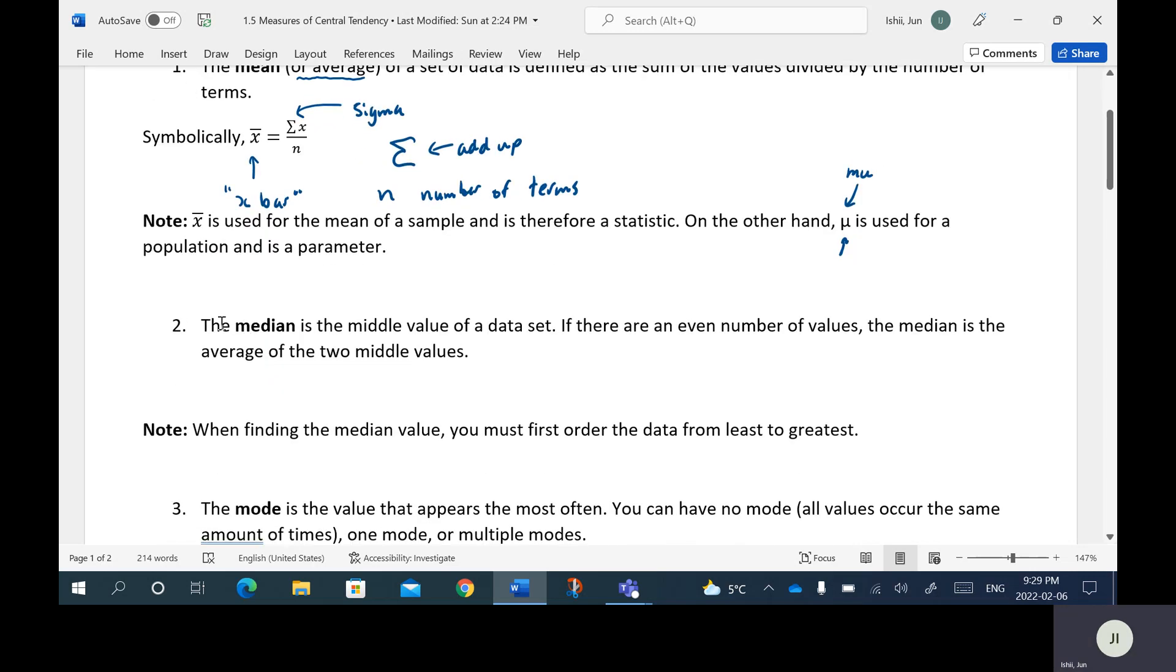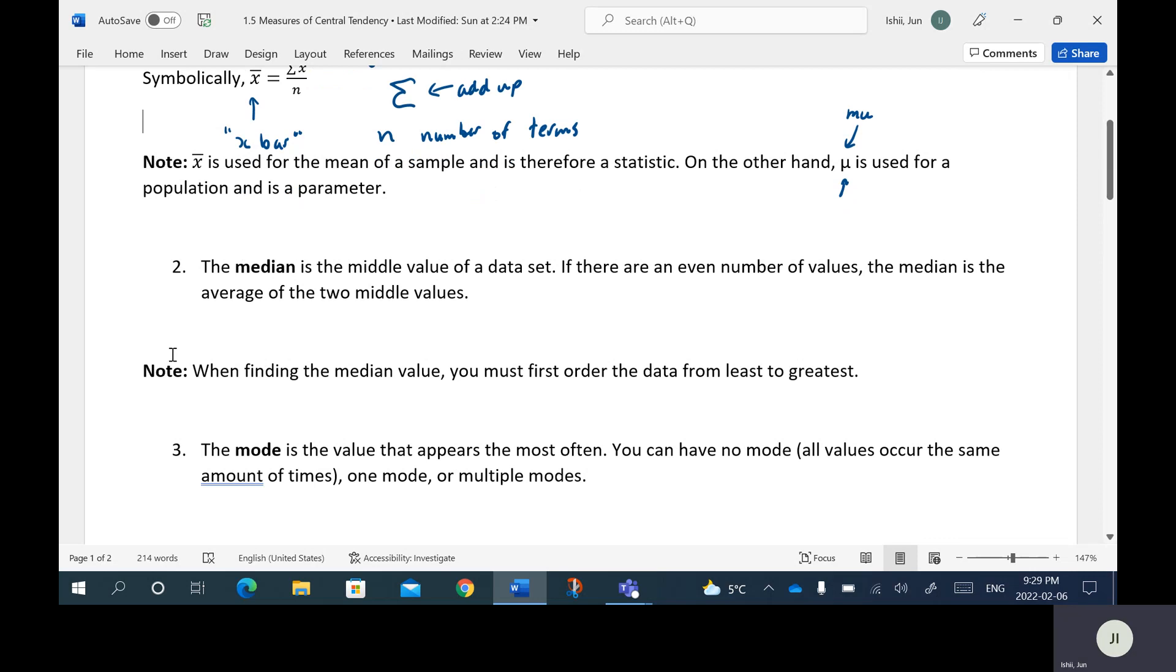Next up we have the median. The median is the middle value of a data set. If there is an even number of values, the median is the average of the two middle values. So basically median is the middle. You can think about like perhaps on a road or when you're driving, the median is the thing in the middle. But one thing you must note is that when you're finding the median value, you must first order the data from least to greatest. So the data itself has to be from least to greatest.